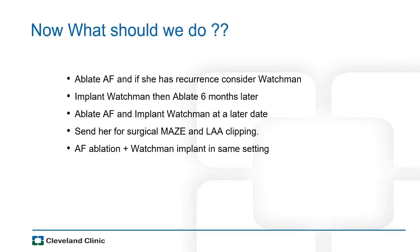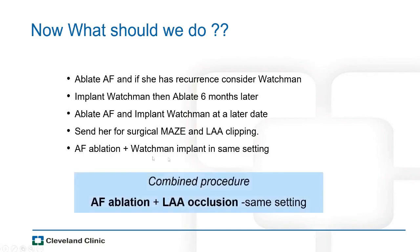The options considered were: ablate first and implant the device later if recurrence; put the device in first then ablate six months later; do ablation and implant at a later time; refer for surgical maze plus LAA clipping; or perform AFib ablation and Watchman implant simultaneously in a one-stop procedure. The one-stop combined procedure starts making sense here.